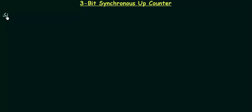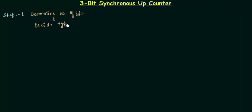Step number one is to determine the number of flip-flops to be used and also decide the type of flip-flop. The number of flip-flops is proportional to the bit of the counter. Here we have to design a three-bit synchronous up counter, so the number of flip-flops is equal to three, giving us three outputs and thus three bits of the counter.